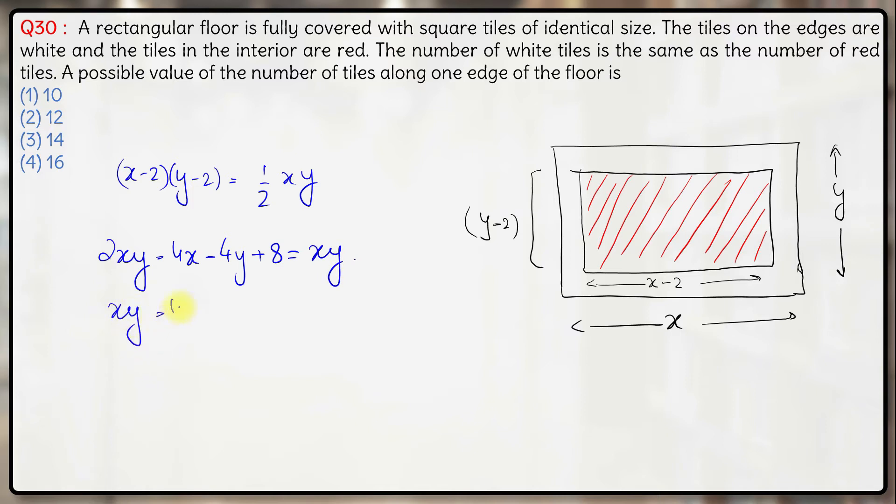So you'll have xy minus 4x minus 4y plus 8 is equal to 0 here.